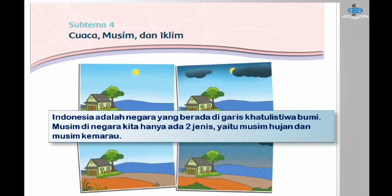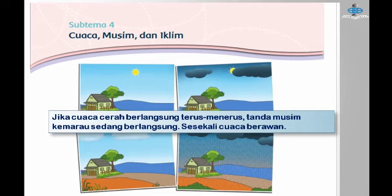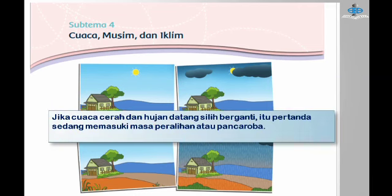Indonesia adalah negara yang berada di garis khatulistiwa bumi. Musim di negara kita hanya ada dua jenis, yaitu musim hujan dan musim kemarau. Jika cuaca cerah berlangsung terus-menerus, itu tanda musim kemarau sedang berlangsung, sesekali cuaca berawan. Jika cuaca mendung dan hujan sering terjadi, itu tanda musim hujan telah tiba. Jika cuaca cerah dan hujan datang silih berganti, itu pertanda sedang memasuki masa peralihan atau pancaroba.